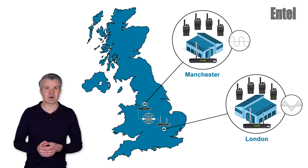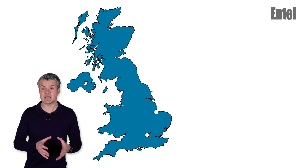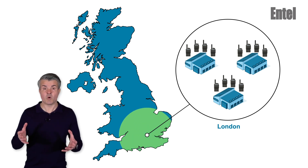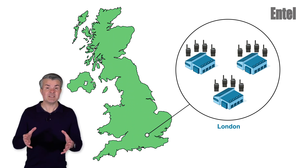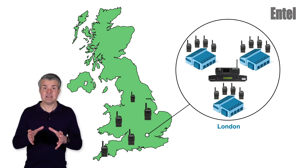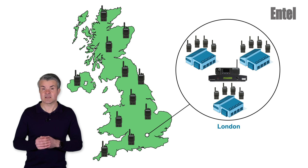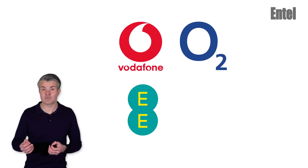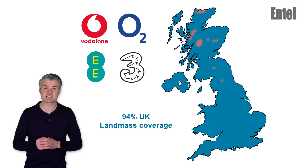Let's take a look at another example. A customer has a London-based linked Capacity Plus multi-site system that covers the whole of London. They now want nationwide coverage. All you need to do is add an Intel universal gateway to your system and as many DN495 radios as are required. There is no expensive infrastructure to install or maintain. The DN495 radios roam all four UK networks — Vodafone, O2, EE and 3 — to provide 94% UK landmass coverage.